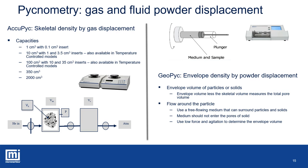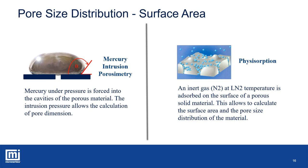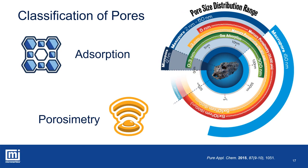There are two main techniques available to determine total surface area, pore size distribution, and pore volume of a material: mercury intrusion porosimetry and gas physisorption. While the physisorption technique always provides information on total surface area ranging from a few square centimeters to thousands of square meters per gram, the technique for pore size evaluation must be chosen according to the material's pore size. Mercury intrusion is the choice for large pores, while gas physisorption should be used for narrow pores. Pores are classified into three main groups: micropores up to 2 nm, mesopores between 2 and 50 nm, and macropores over 50 nm. The complete pore size range covers about seven orders of magnitude and there is no single technique covering the whole range.